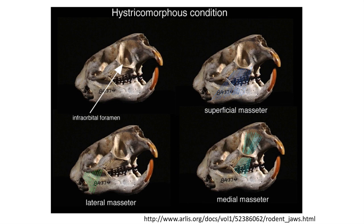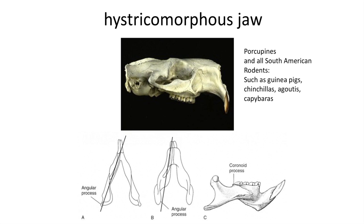The final condition is the most bizarre: the hystricomorphous condition, which features a very large infraorbital foramen through which a very large medial masseter passes. The hystricomorphous condition is found in South American rodents such as guinea pigs and capybara, as well as spring hares of Africa, and both New World and Old World porcupines. Rodents that exhibit this condition also have an angular process on the dentary, which somewhat resembles the condition found in marsupials.